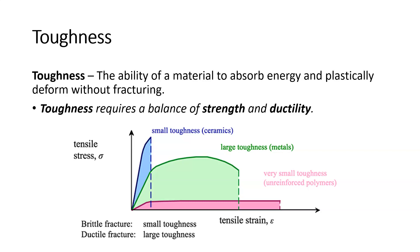Toughness is the ability of a material to absorb energy and plastically deform without fracturing. Think of a car's bumper — we want the plastic part to be tough. We can hit it with a baseball bat or in a low-impact collision, and it's going to absorb that energy and basically come out unscathed, not permanently deformed. Toughness requires a balance of strength — we don't want the bumper to bend permanently — and ductility. We don't want brittle bumpers; we want them to plastically deform but not shatter like brittle glass.